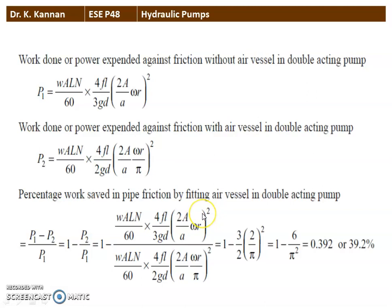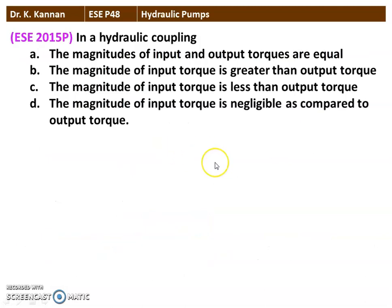When you fit an air vessel in the double acting pump, the saving in power is 39.2%. The next question from the 2015 question paper: In a hydraulic coupling, which of the following is correct? The magnitude of input and output torques are equal; input torque is greater than output torque; input torque is less than output torque; or input torque is negligible compared to output torque. The correct option is: the magnitude of input and output torques are equal.